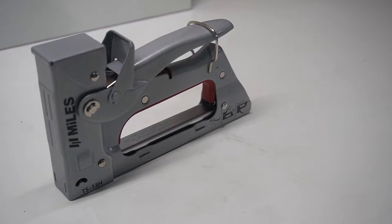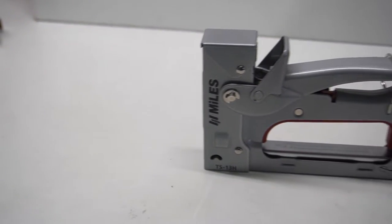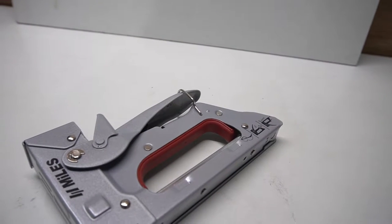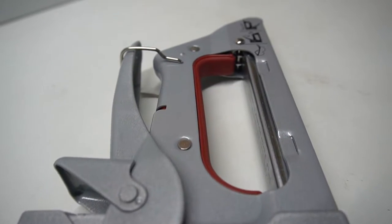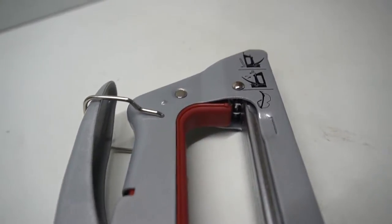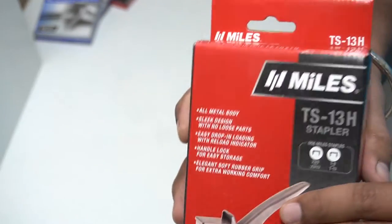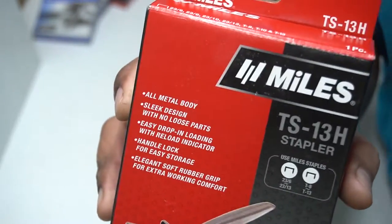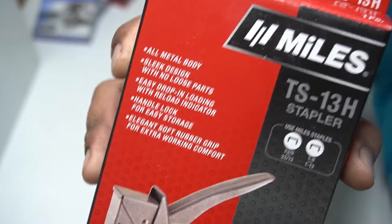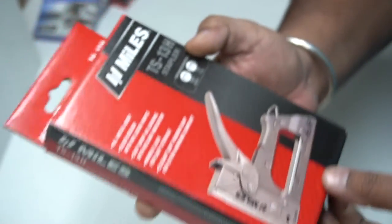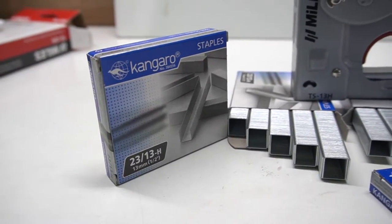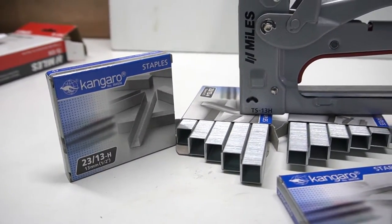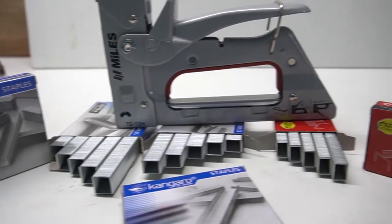The tool comes in cardboard packaging. On the box, there are some key features written, along with two different sizes of pins supported by this gun. TS13 refers to the depth of the magazine, and this magazine supports pins up to 13 millimeters.